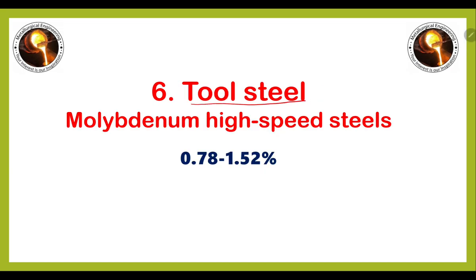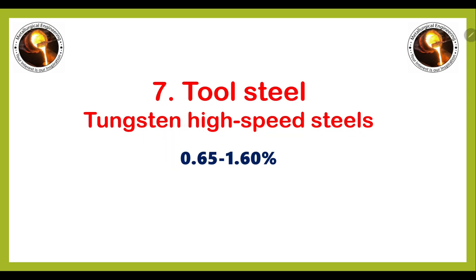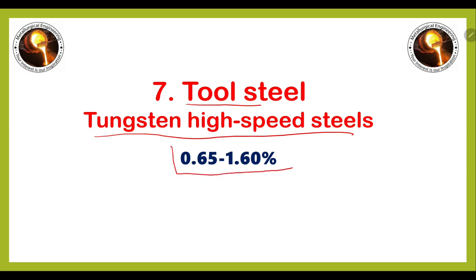The next one is tool steel. There are different types of tool steels. For example, molybdenum high speed steel, in which the carbon percentage varies from 0.78 to 1.52 percent. The second type of tool steel is tungsten high speed steel, in which the carbon percentage varies from 0.65 to 1.60 percent.